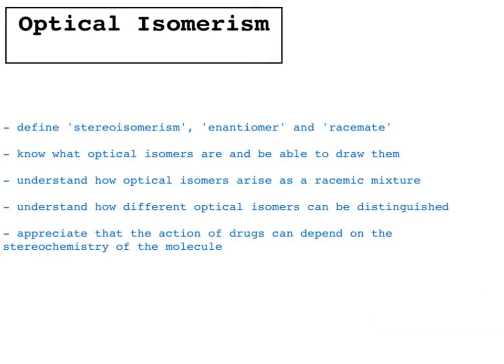Here are our aims. First, some definitions — you need to be able to define stereoisomerism, enantiomer, and racemate. You need to know what optical isomers are and be able to draw them, understand how optical isomers arise as a racemic mixture, understand how different optical isomers can be distinguished, and appreciate that the action of drugs can depend on the stereochemistry of the molecules — that is, different enantiomers can have different effects on the body as drugs.